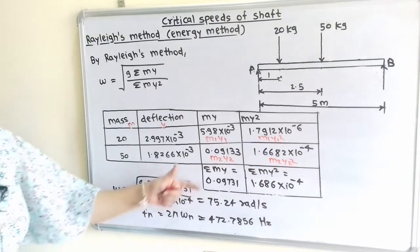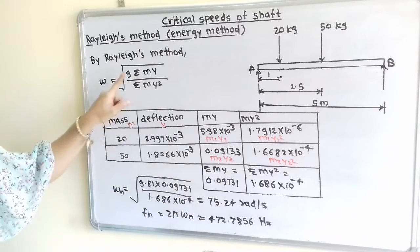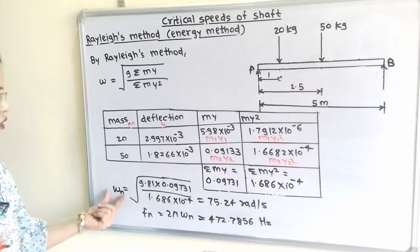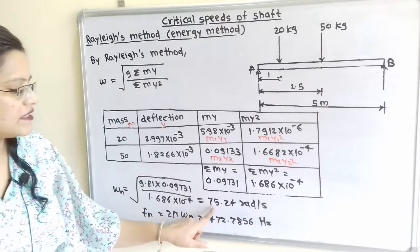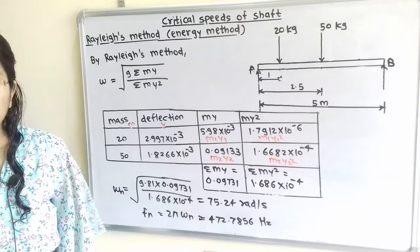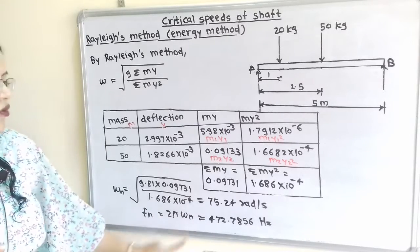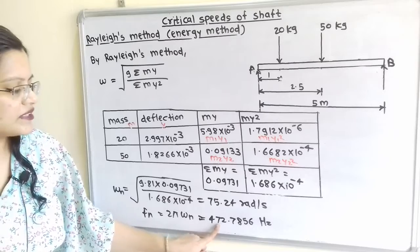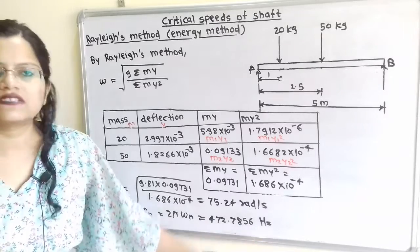Putting these values into the formula with G equals 9.81, the natural circular frequency omega n equals 75.24 radians per second. Therefore, the natural frequency Fn equals omega n divided by 2 pi, which equals 11.97 hertz.